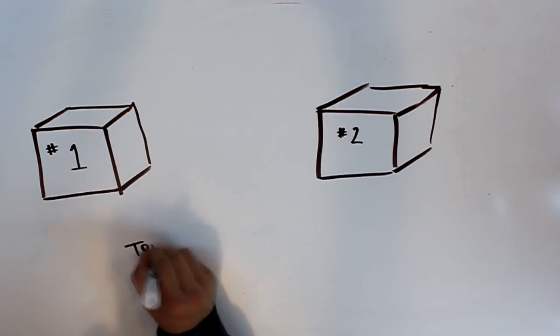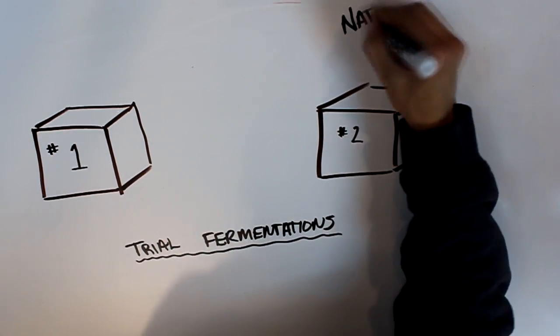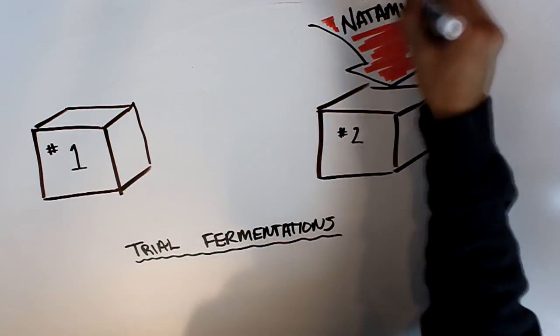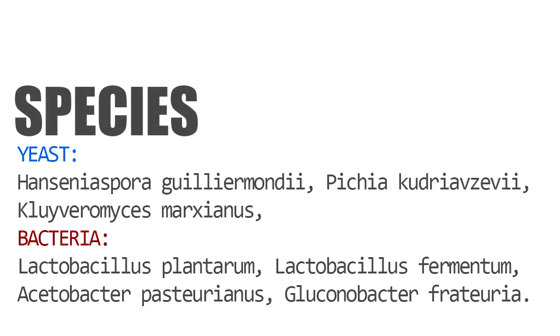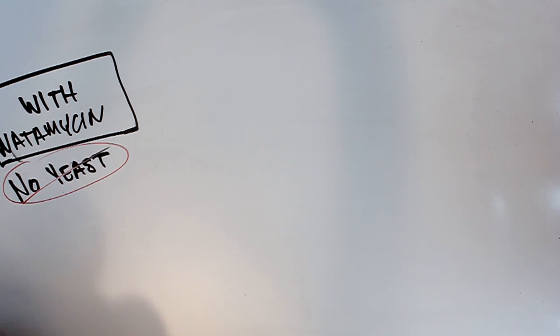Trial cocoa bean fermentations were done, one with the addition of 200 parts per million of Natomycin to inhibit the growth of yeast, and one regular fermentation with yeast. These trials were compared and contrasted. The main species involved in the fermentation process are listed below. In the fermentations which Natomycin was added, the same bacterial species were found, but yeast growth was inhibited.